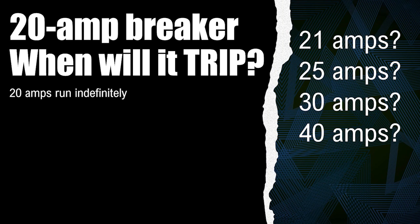And the biggest takeaway I want us to have today is that if ETL gets this breaker from Siemens and it trips at 20 amps — and it's rated for 20 amps — they're not going to put their stamp of approval on it. It's not going to be a listed product because it didn't meet the standard. Now we know Siemens is going to hit the standard every time because they're just good like that — and I love other brands too, don't get me wrong.